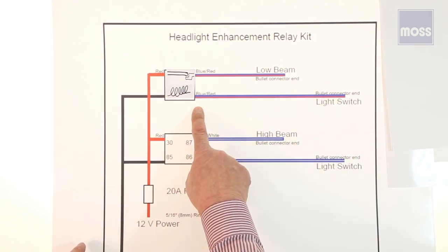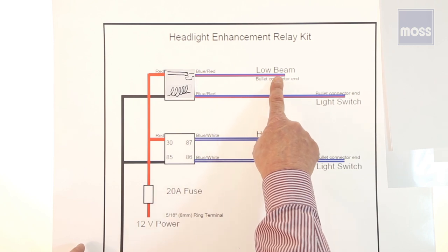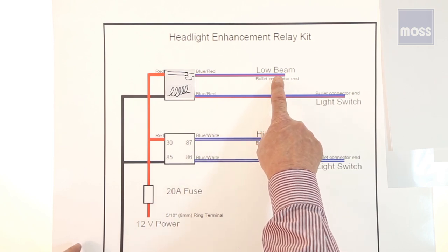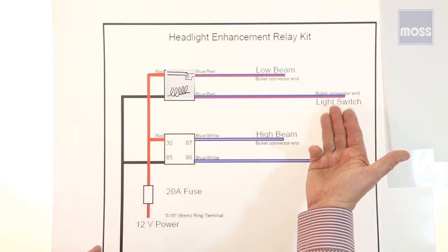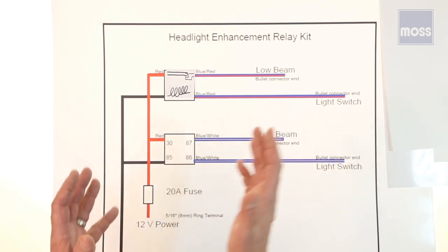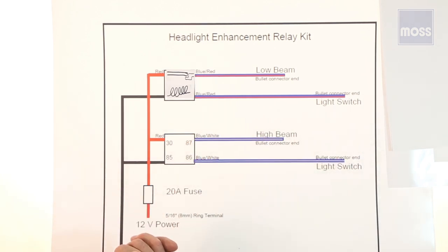You've got power, you've got ground. We have a switch which is going to bring power in and have a wire that goes off to feed the lights. It's very easy. By doing this, we take the load off our light switch. Our lights are brighter and safer and we can enjoy our car.